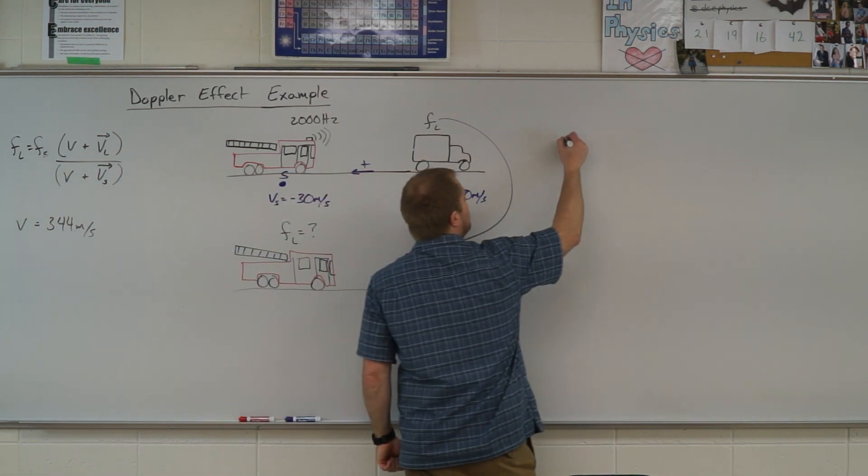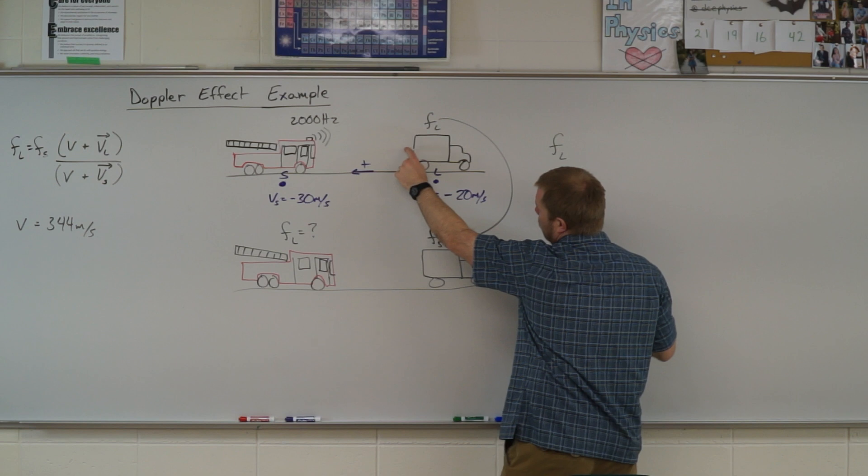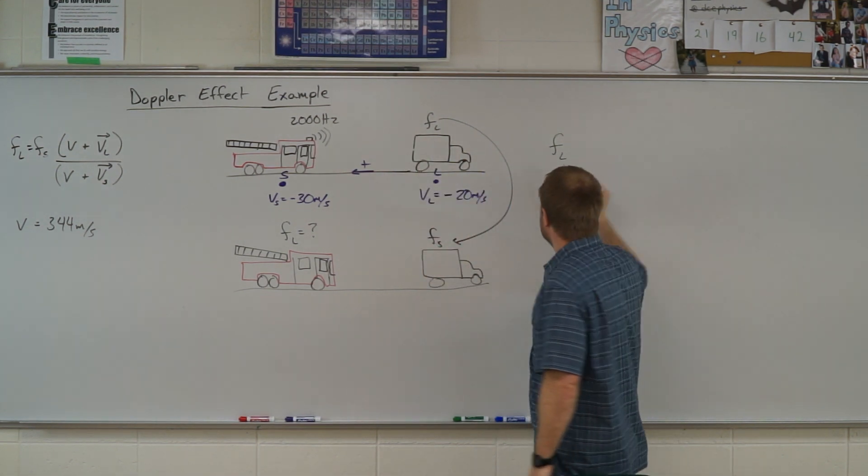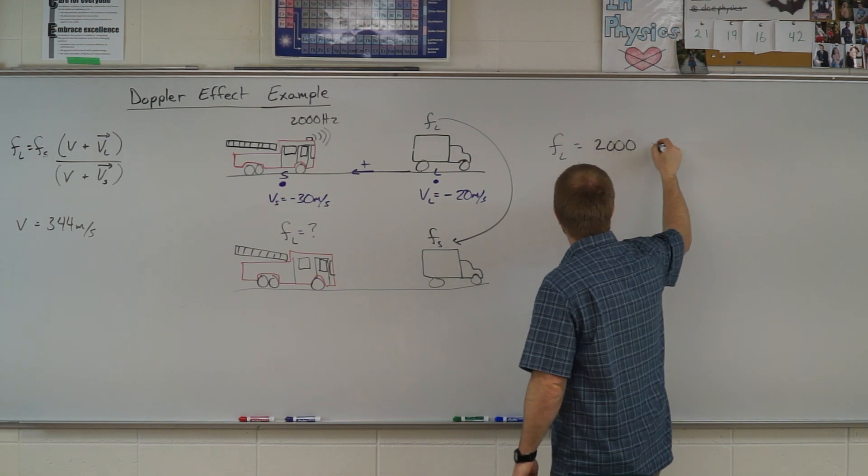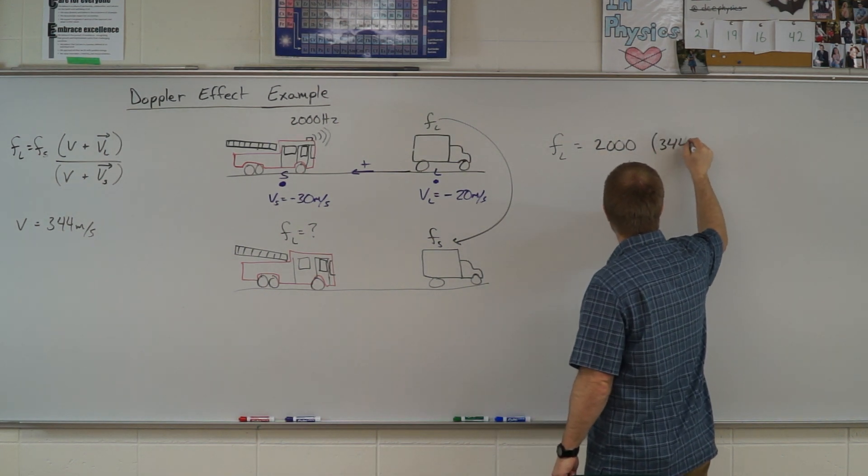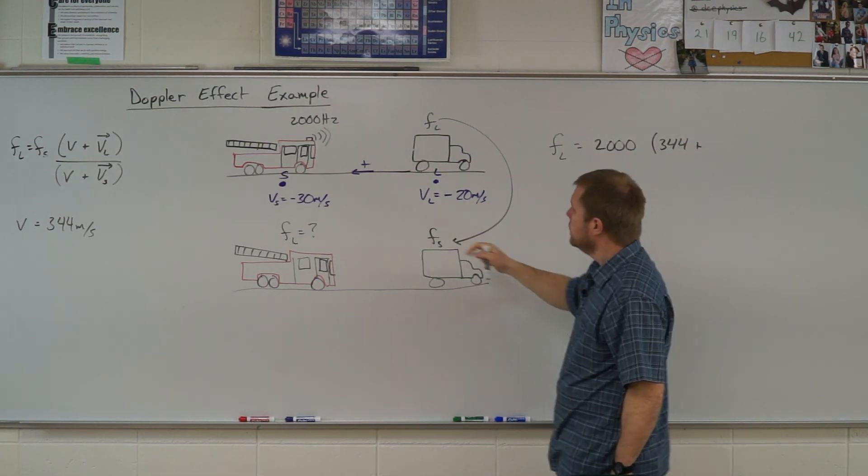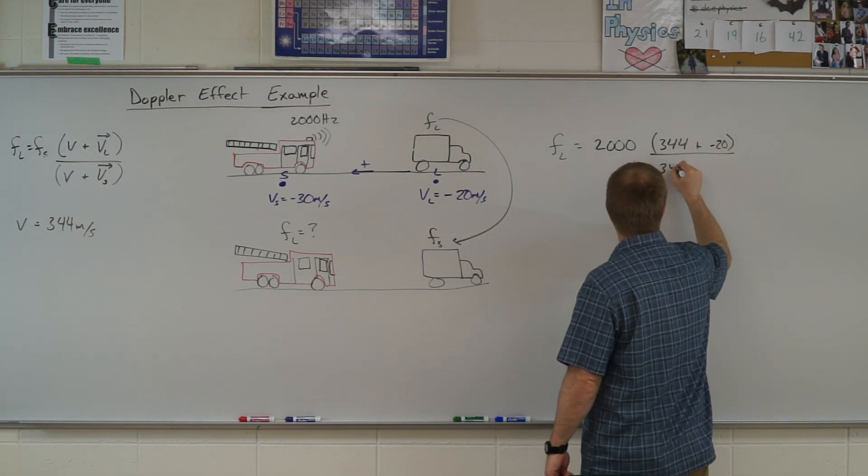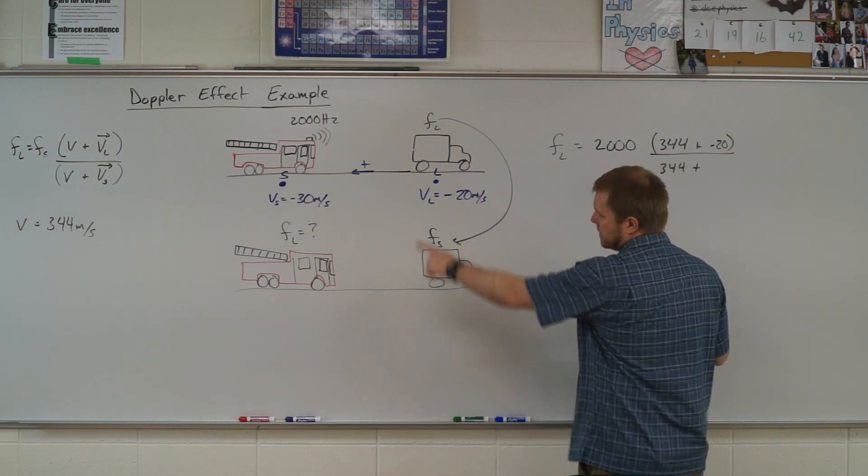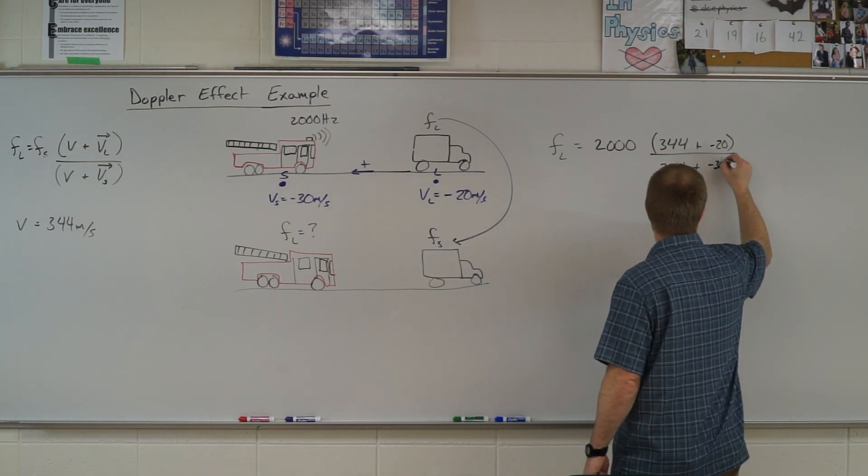So to set that up, the frequency the back of the truck is going to hear and then reflect back is equal to the source frequency of 2000 hertz times 344, the speed of sound, plus the velocity of the listener, so negative 20, all divided by 344 plus the velocity of the source, negative 30.